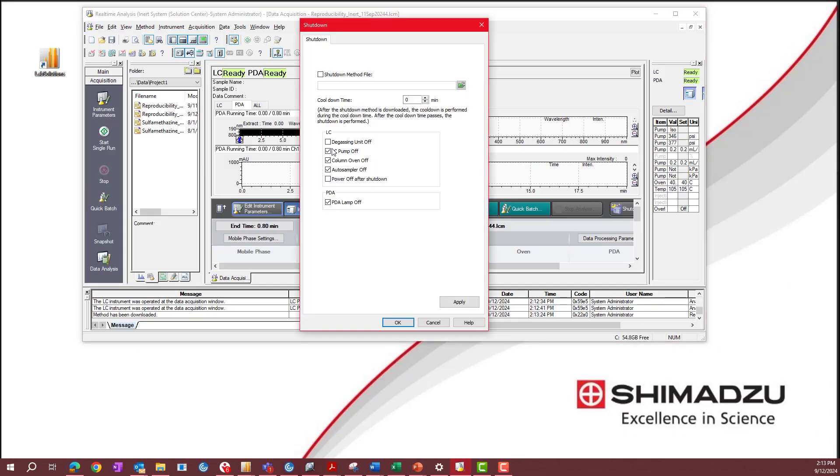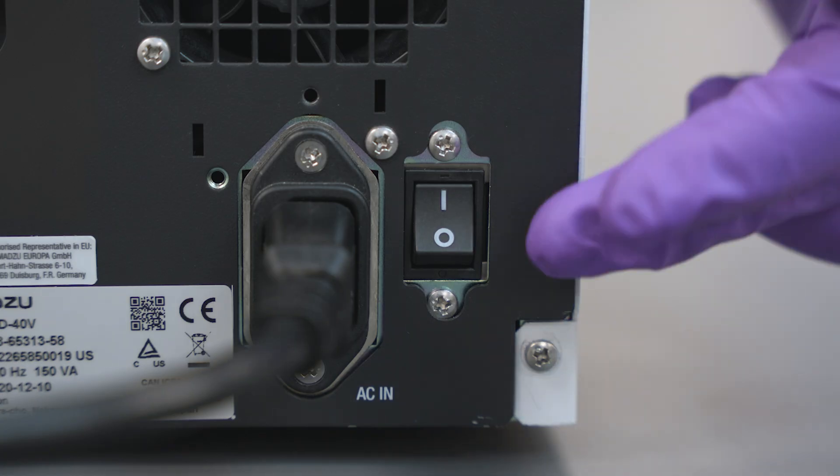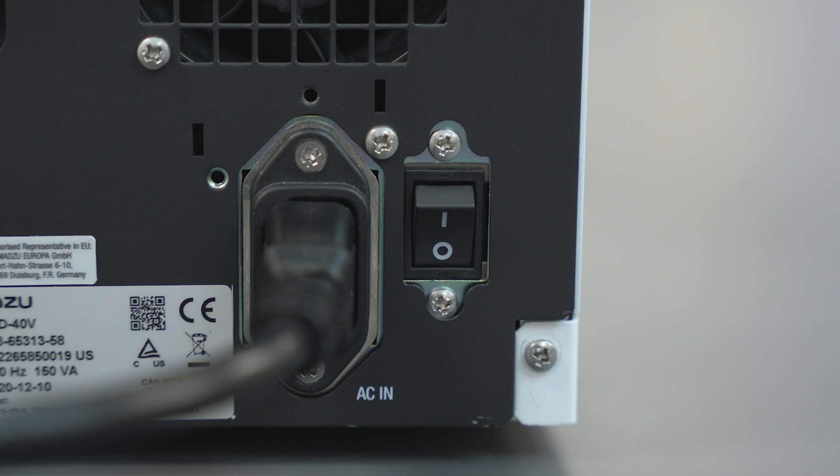Turn the instrument off from lab solutions. Once the instrument is shut down, turn the main power switch located by the power cable at the back of the detector off.